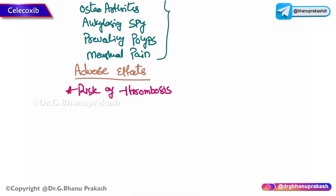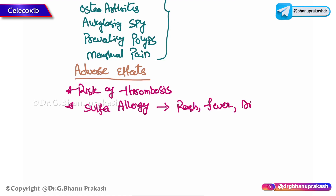Celecoxib mainly contains a sulfonamide group, which can trigger reactions in individuals with sulfa allergies. If this drug is given to patients known for sulfa allergies, symptoms will appear in the form of rash, fever, and difficulty in breathing.